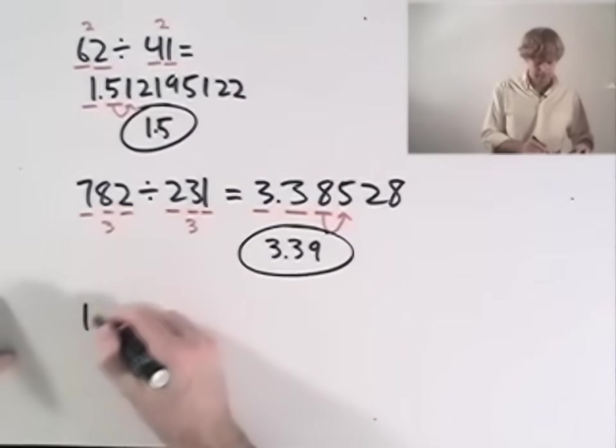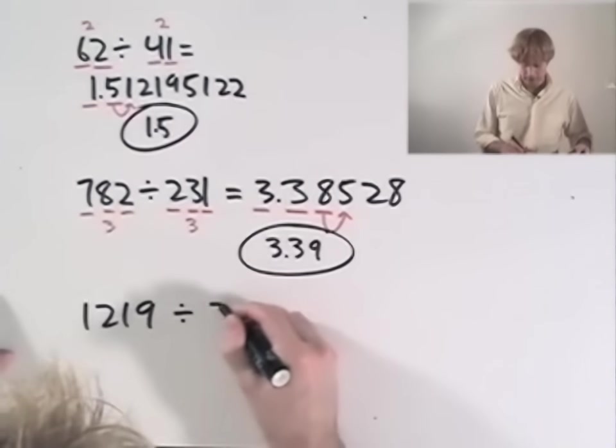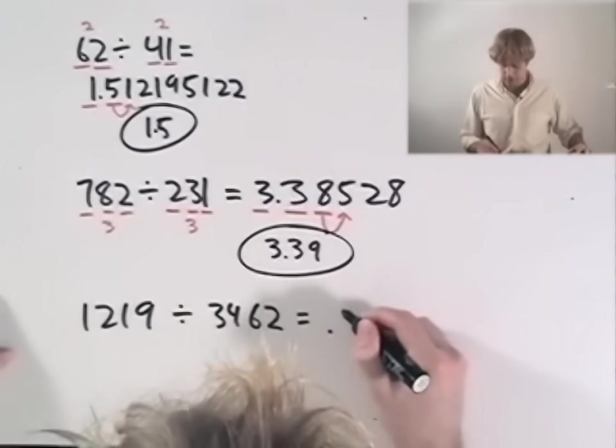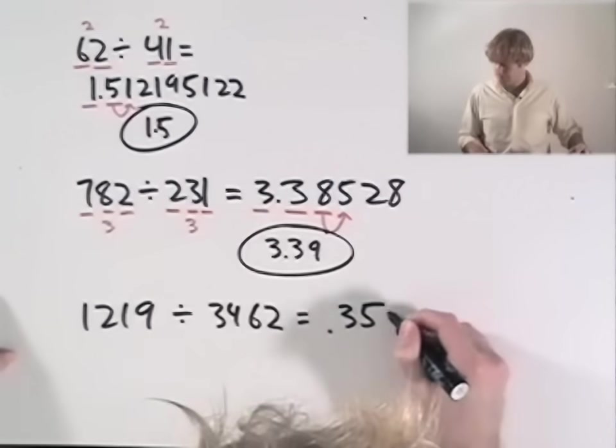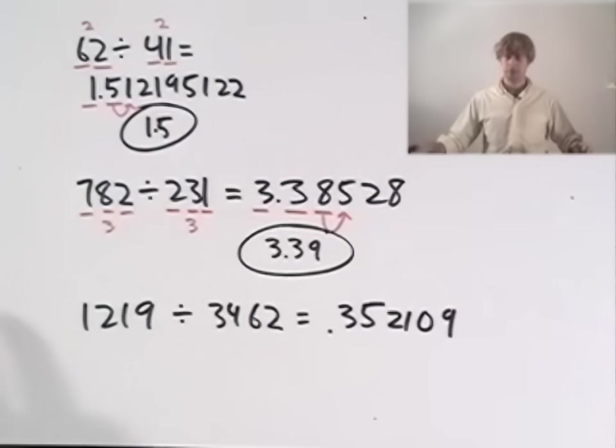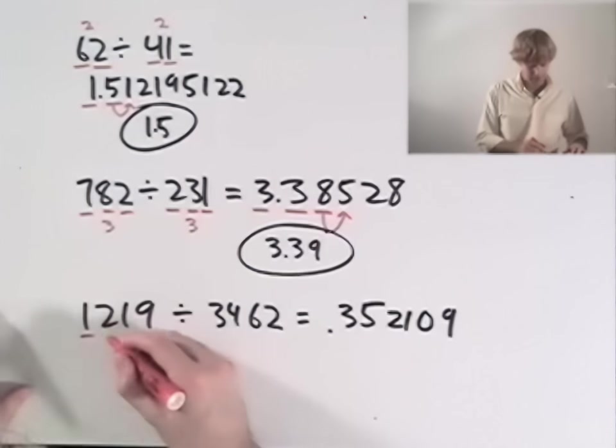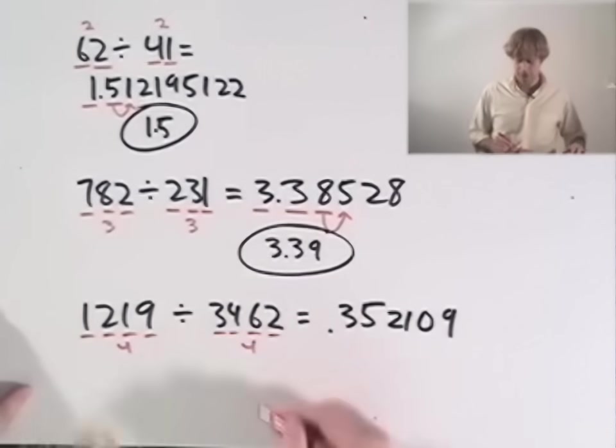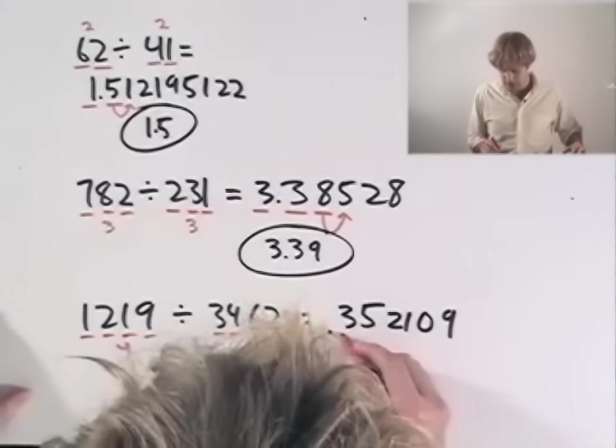Let's go one more example. 1219 divided by 3462, another pretty ugly number, 0.352109. How many numbers do I round it to? I'm sure you've already gotten the hang of it. Four significant figures here, four significant figures here. That means I round my answer to, you guessed it, four significant figures.